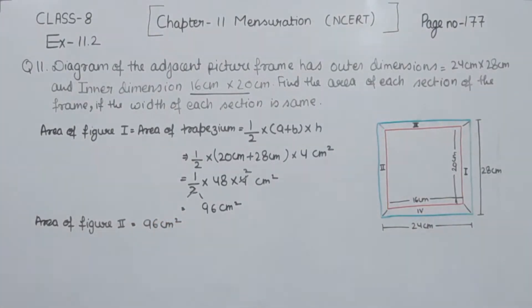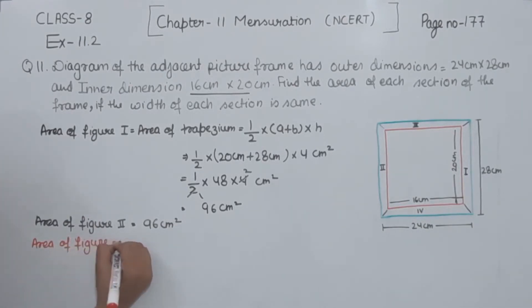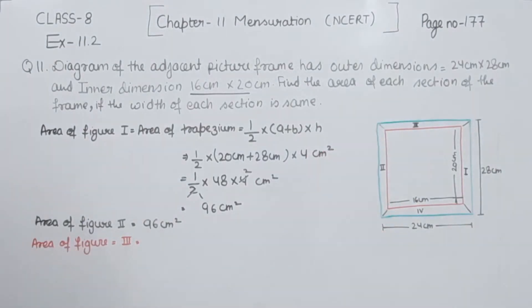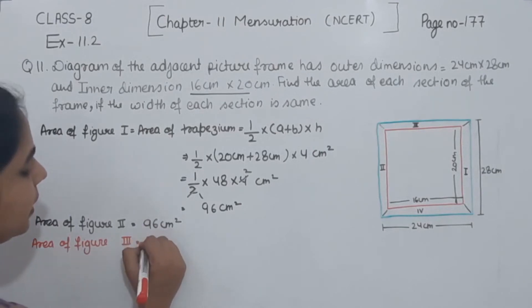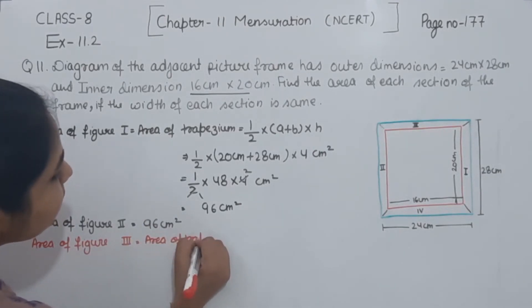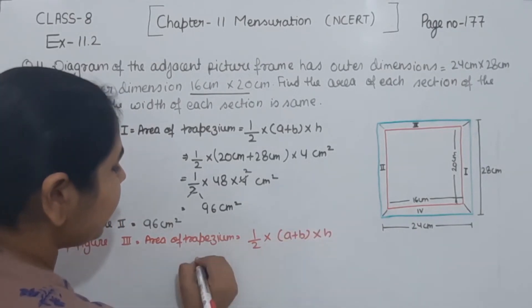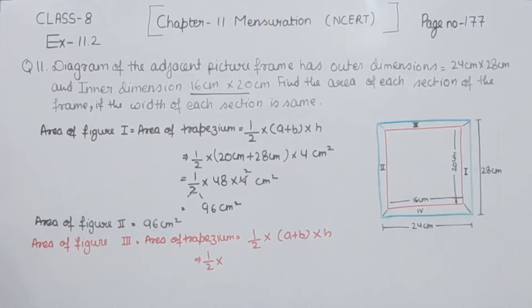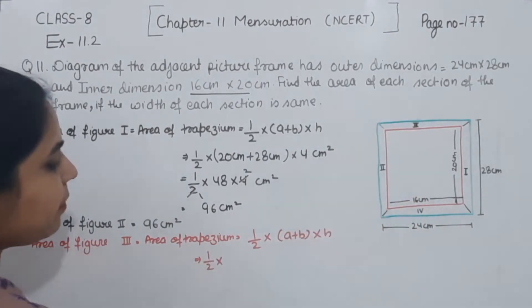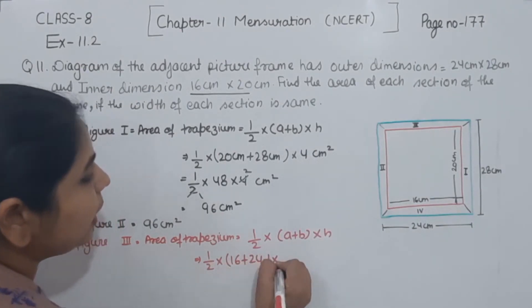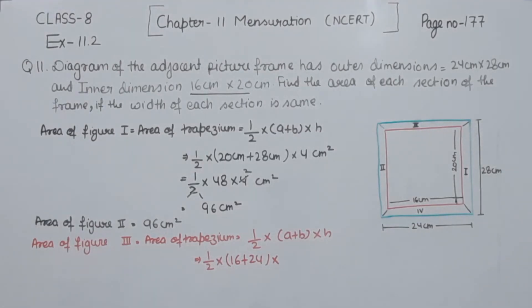Now we come to the third figure. The area of figure 3 is also a trapezium. The formula is half multiplied by (a + b) multiplied by height. Here, one side is 16 cm and the other is 24 cm, so 16 + 24. The distance between them is 4 cm.